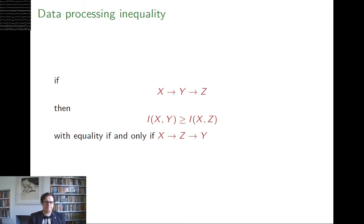And there's an equality condition, which is basically if X, Z, and Y are also a Markov chain. And that basically says that Z and Y have the same, hold the same information about X.